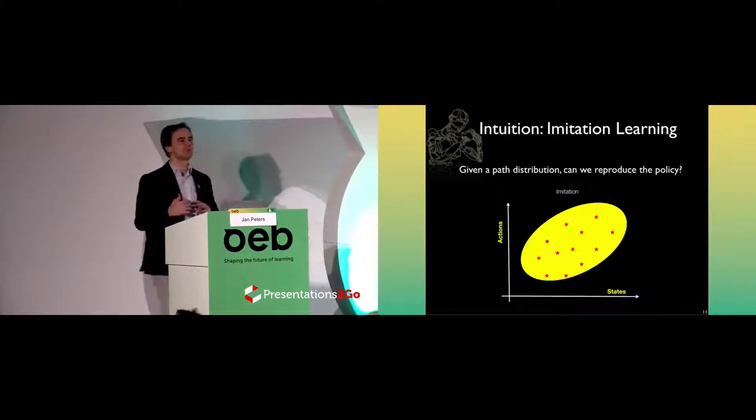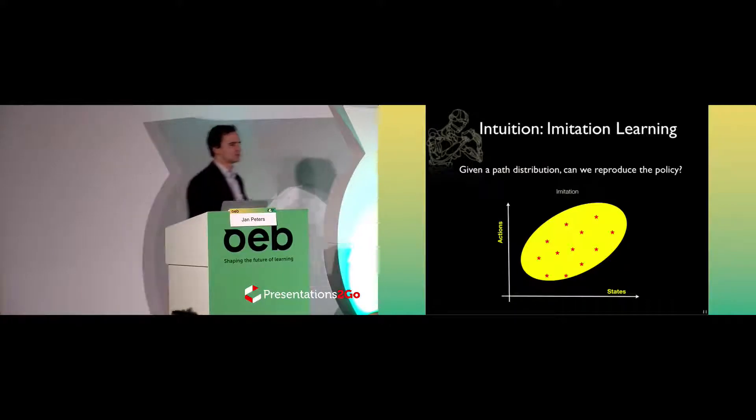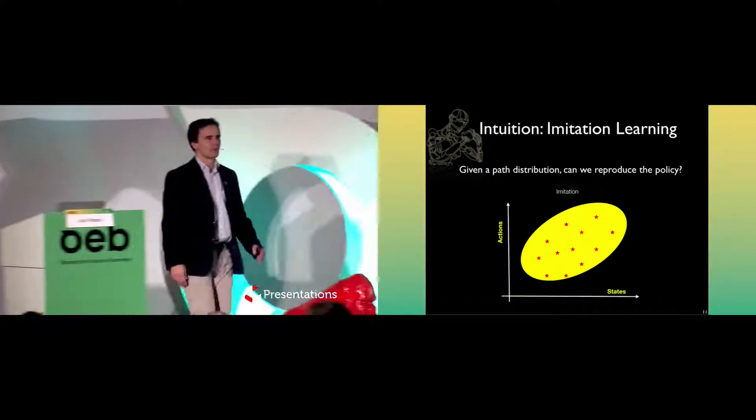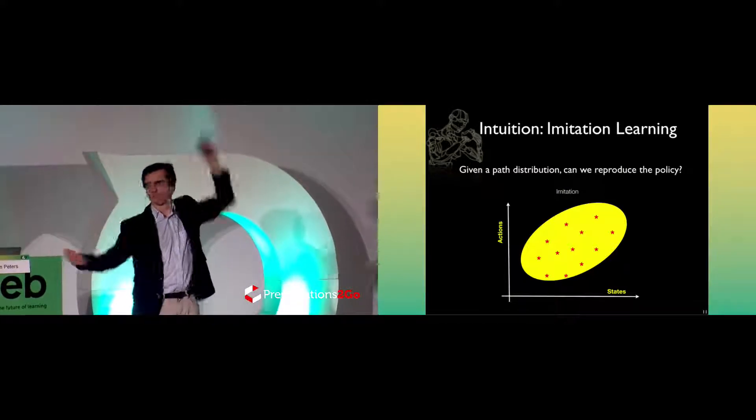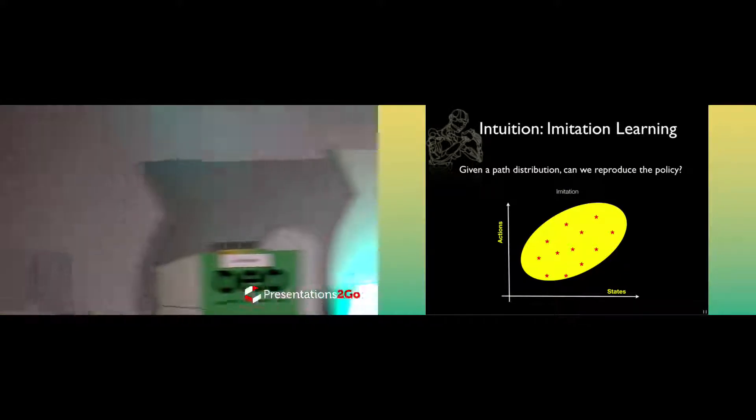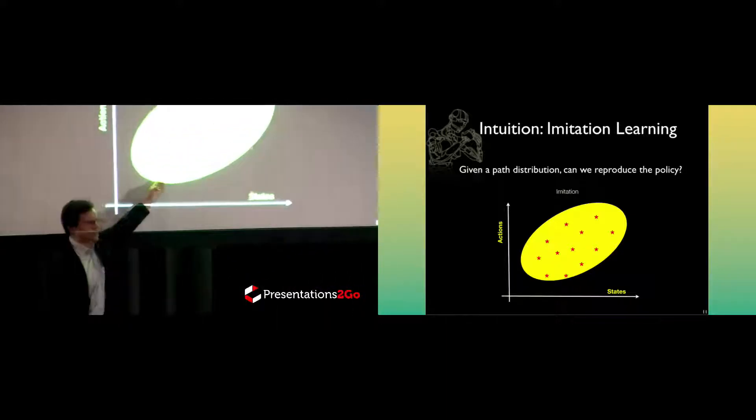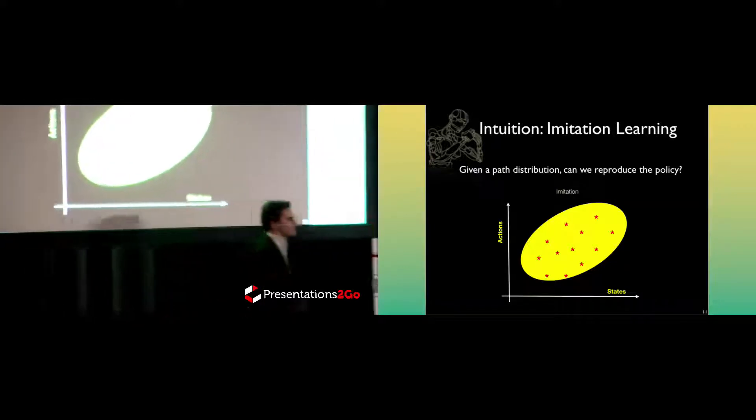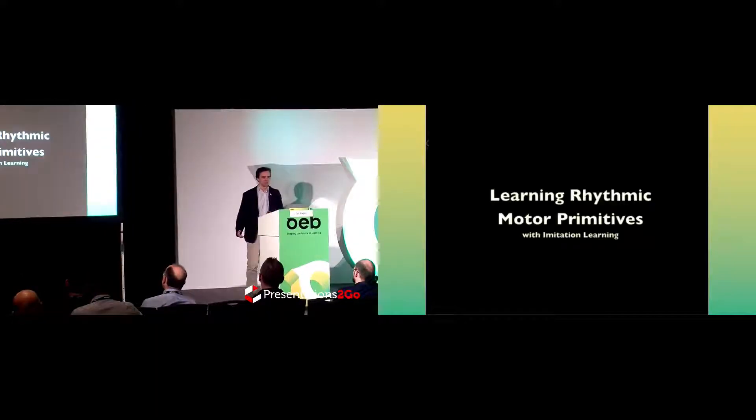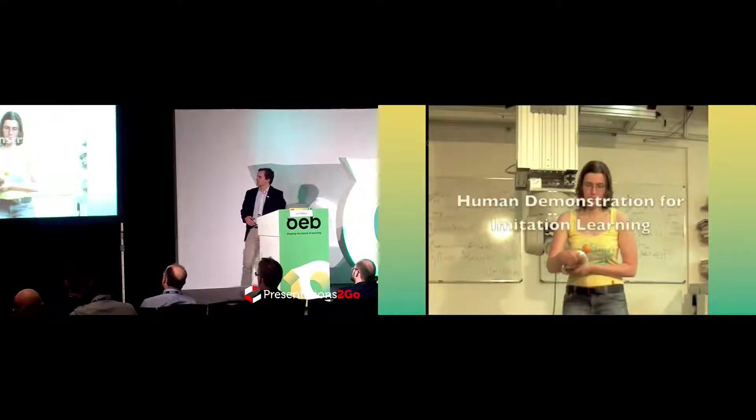Intuitively, this means something very simple. This just means for every state and action pair which I've observed, every one of these little asterisks, we want to reproduce these. If we only care about one state action pair, obviously. If we care about longer trajectories, it becomes a slight bit more difficult.